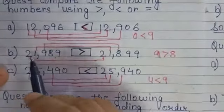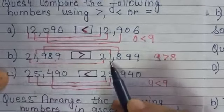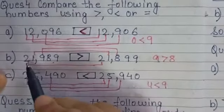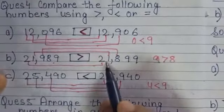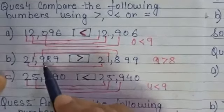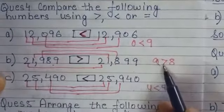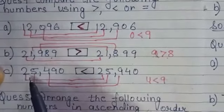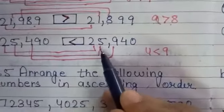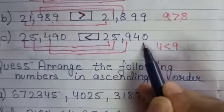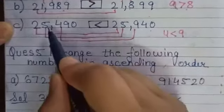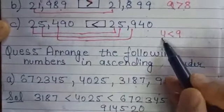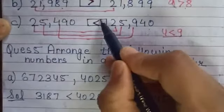Part B: 21,989 and 21,899. Digits 2 and 2 are same, 1 and 1 are same, but 9 is greater than 8, so the greater-than sign goes on the left. Part C: 25,490 and 25,940. Digits 2 and 5 match, but then 4 versus 9 — since 9 is greater than 4, the greater-than sign goes on the right side.